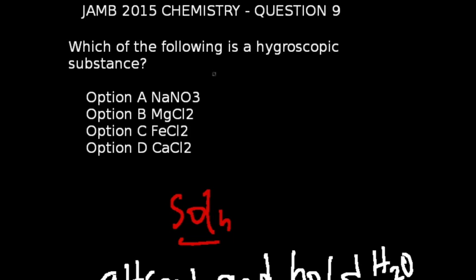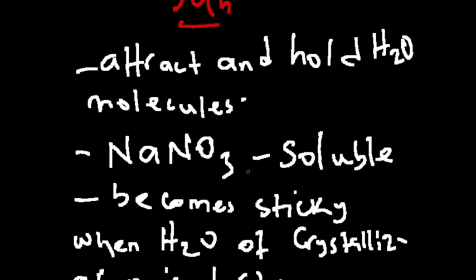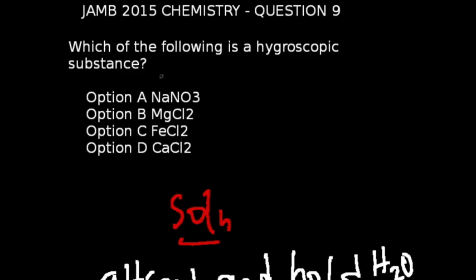Question number 9 of JAM 2015 chemistry exams: Which of the following is a hygroscopic substance? A hygroscopic substance is any substance that can attract and hold water molecules to itself either through absorption or adsorption. Sodium nitrate is a typical example of such a substance and it is also soluble in water. It becomes sticky when the water of crystallization is lost. The correct answer is option A, which is sodium nitrate.